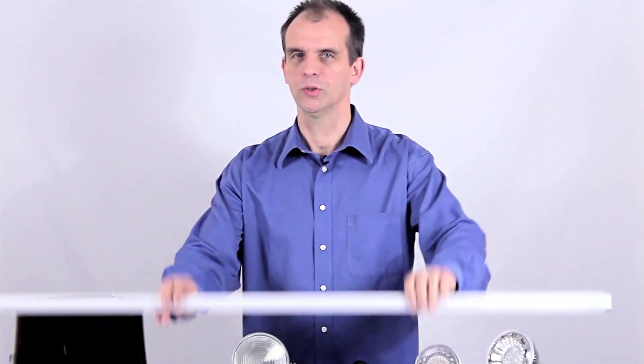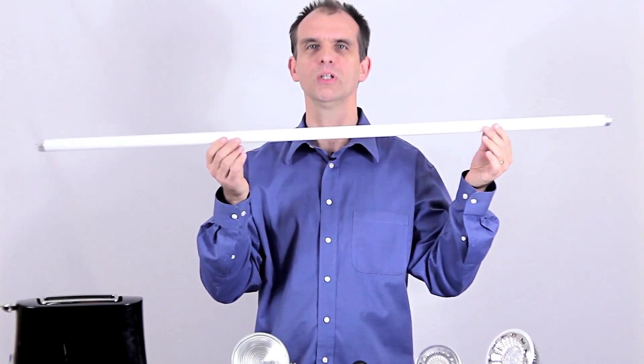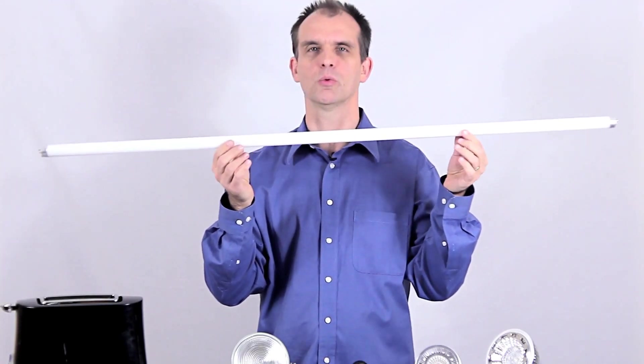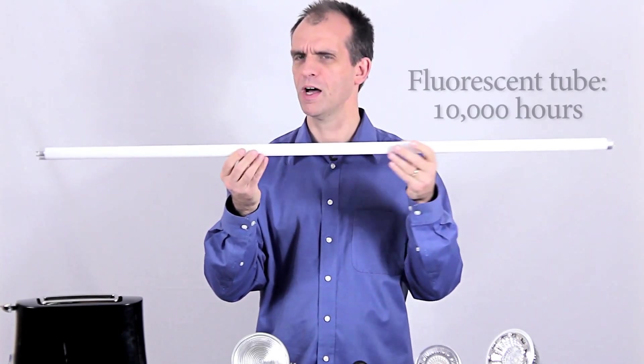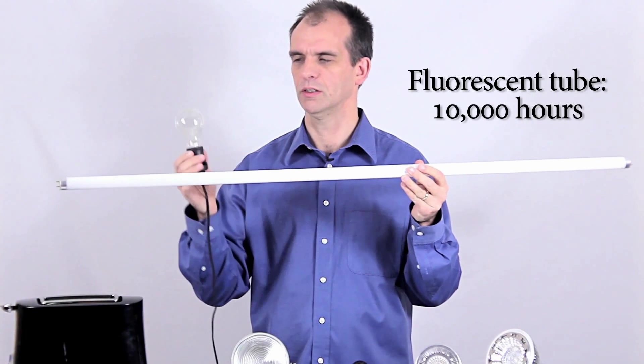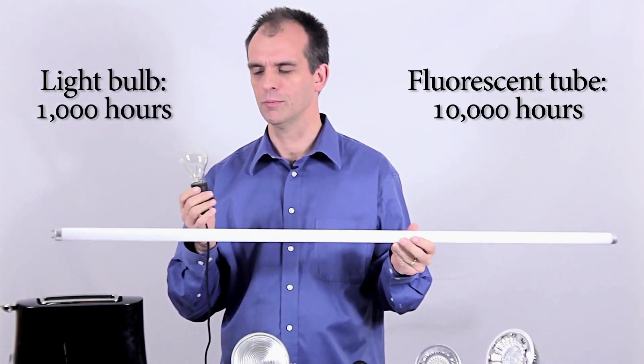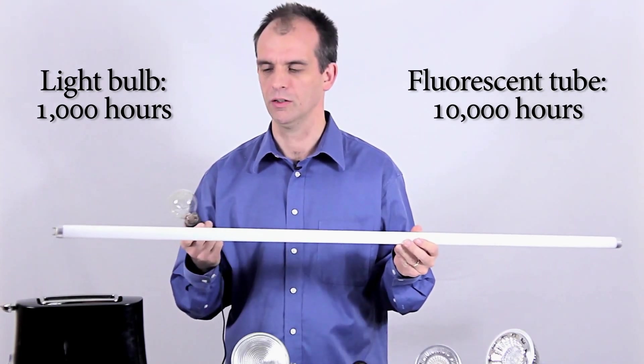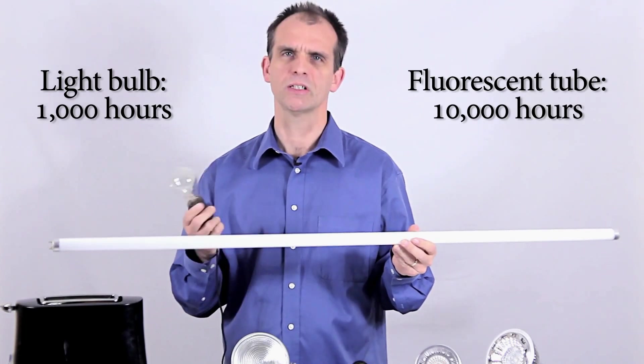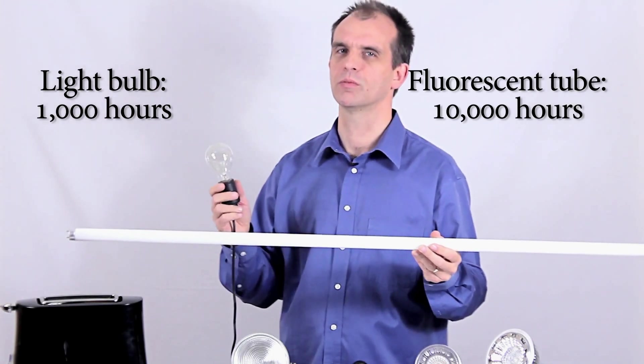So then, the great innovation in lighting was the fluorescent tube. And I'm sure you're very familiar with these. They're in millions and millions of offices all around the world. And they work very effectively. A fluorescent tube will last about 10,000 hours, whereas a light bulb will last maybe 1,000 hours. 1,000 hours sounds like a long time, but when you consider that there's 8,760 hours in a year, a light bulb really doesn't last that long if you have it on all the time. You're going to replace it almost 9 times every year.